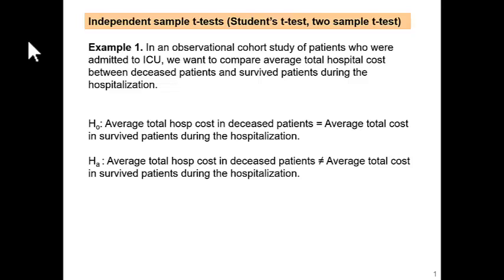Let's look at the example. In an observational cohort study of patients who are admitted to ICU, we want to compare average total hospital cost between deceased patients and survived patients during hospitalization. As we learned in the hypothesis testing video, there are two hypotheses. One, the null hypothesis: average total hospital cost in deceased patients is no different from, or equal to, average total cost in survived patients during hospitalization. And the alternative hypothesis: the two are different.